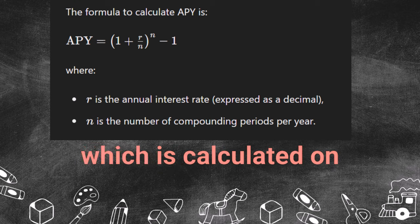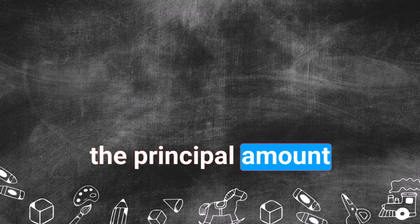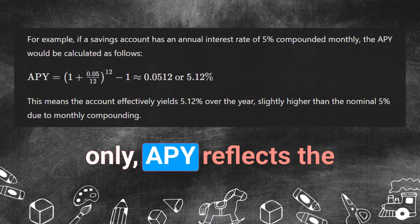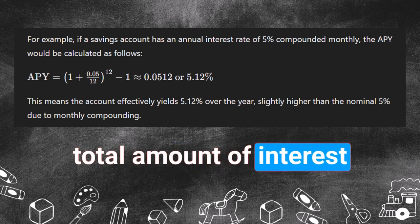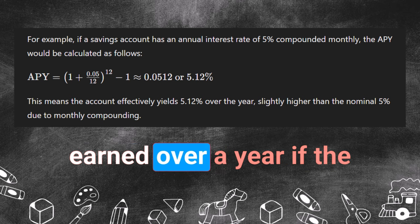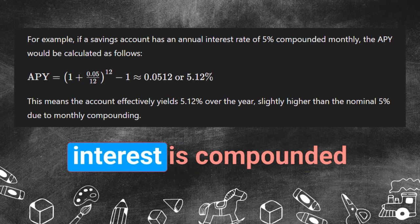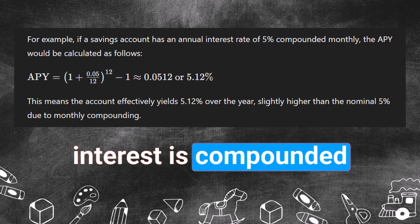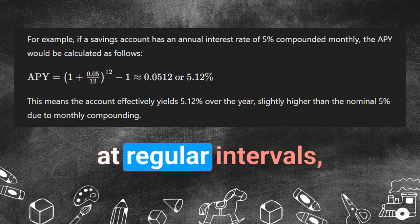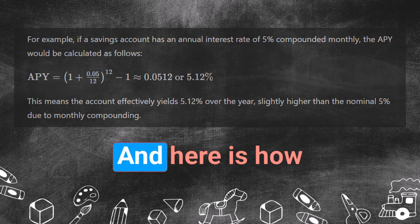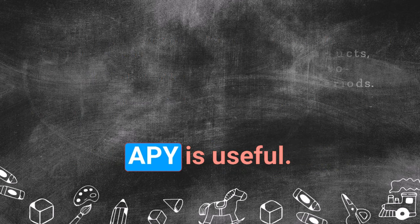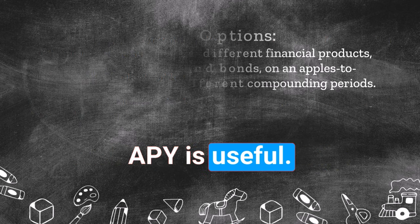Unlike simple interest, which is calculated on the principal amount only, APY reflects the total amount of interest earned over the year if the interest is compounded at regular intervals, such as monthly or daily. And here is how APY is useful.